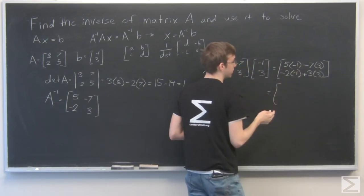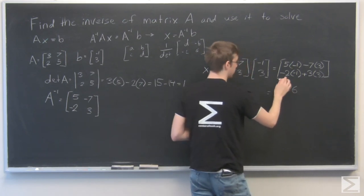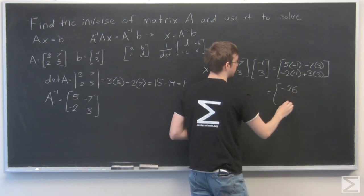Negative 5 minus 21, that's minus 26, and that's 2 plus 9 is 11.